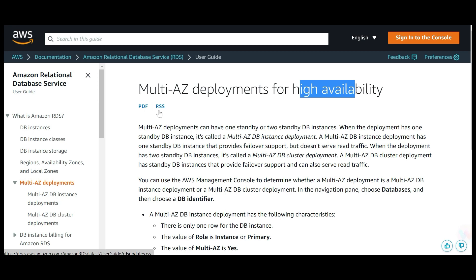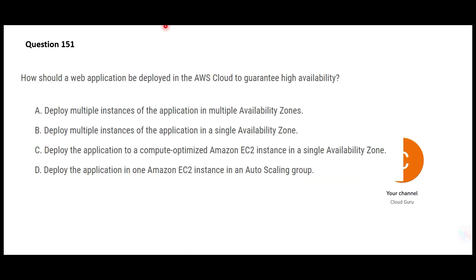High availability is like having two mothers — if one goes down, the other can still take care of the baby. Not a desired scenario in the real world, but in IT and infrastructure, that is what we want so you never lose business because your application is down. The problem with option B is it says you deploy multiple instances, which is fine, but on a single AZ. What happens if that single AZ goes down?